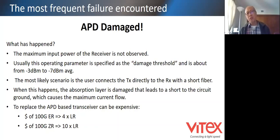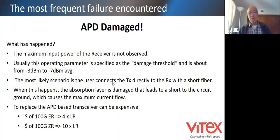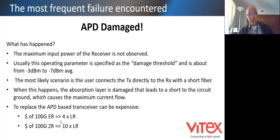This threshold is called the damage threshold. It's usually minus 3 dBm to minus 7 dBm, with minus 7 dBm being very standard and minus 3 dBm seen more nowadays. The most likely scenario of damage is the user connecting the transmitter directly to the receiver with a short fiber back to back. When this happens the absorption layer is damaged, which leads to a short to circuit ground and causes maximum current flow. Replacing an APD transceiver is not cheap - 400G ER is about four times LR cost, and CR is about ten times LR.